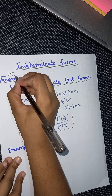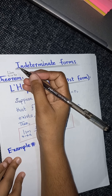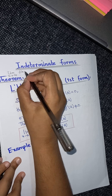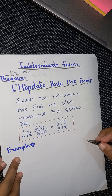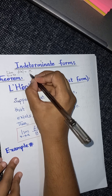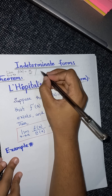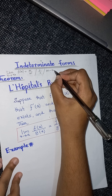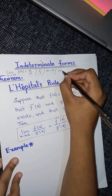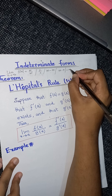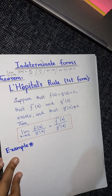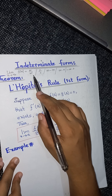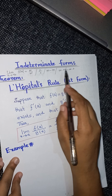For example, when we take a limit as x approaches x-naught on some function — here we have a rational function f(x) — sometimes we get infinity over infinity, or zero over zero, or it may happen that we get infinity minus infinity, or infinity times zero, or negative infinity times zero.